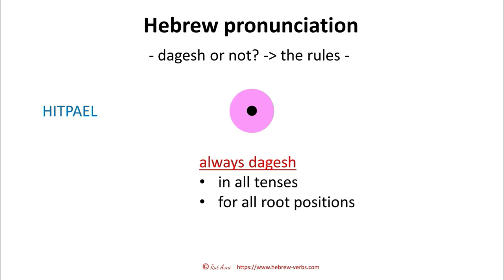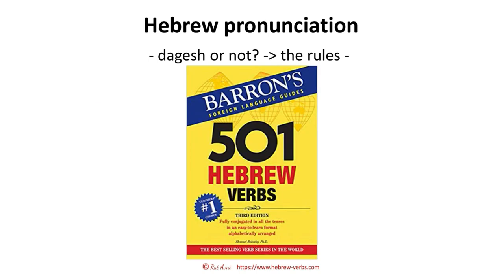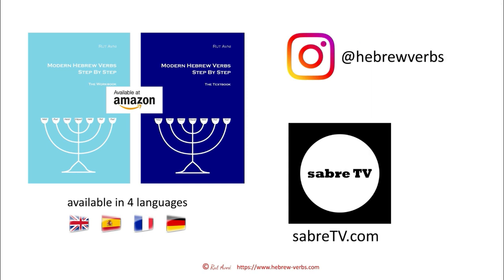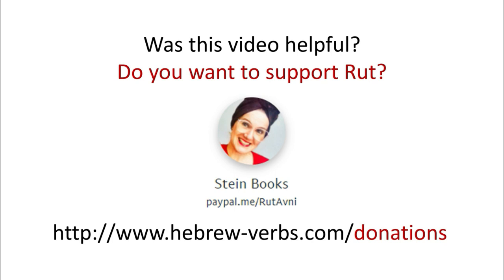Now where to look this up? In Barron's 501 Hebrew Verbs — I say it all over again, this is the bible. And of course the other possibility is to study with my 90-day course. I hope you liked it and it gave you some enlightenment. See you in the next video — neshikot, shalom!